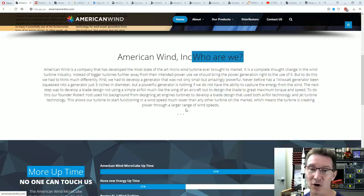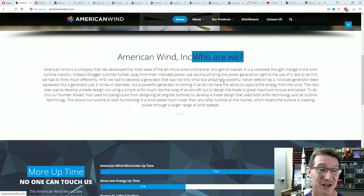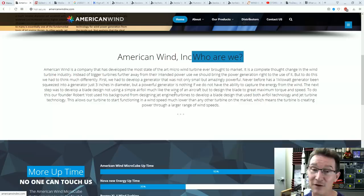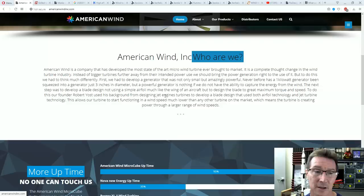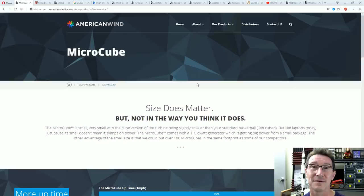It's a company called American Wind and they've got this revolutionary new wind turbine technology. It's a company that has developed the most state-of-the-art micro wind turbine ever brought to market. Never before has a one kilowatt generator been squeezed into a generator just three inches in diameter. To design the blade to generate maximum torque and speed, our founder Robert Yost used his background from designing jet engine turbines to develop a blade design that uses both airfoil technology and jet engine technology.